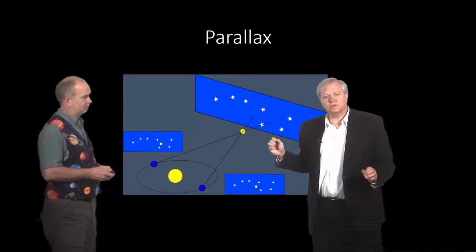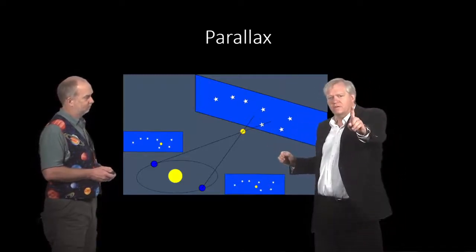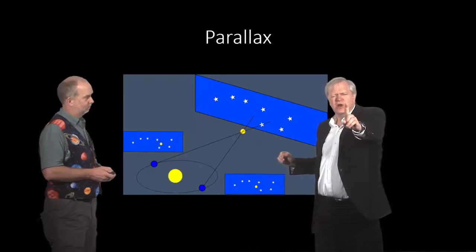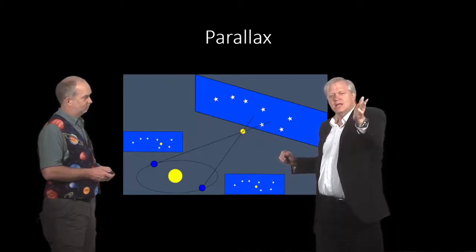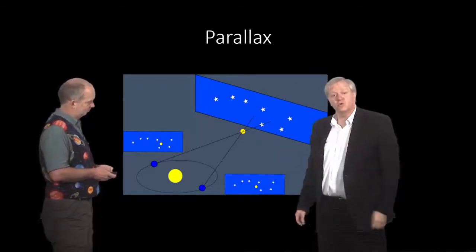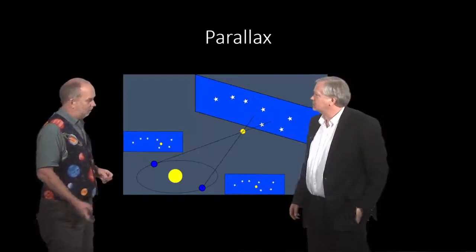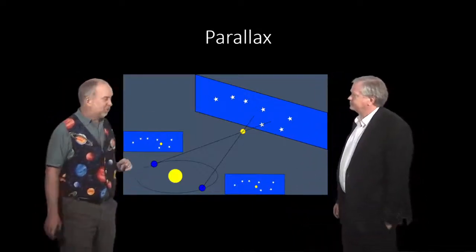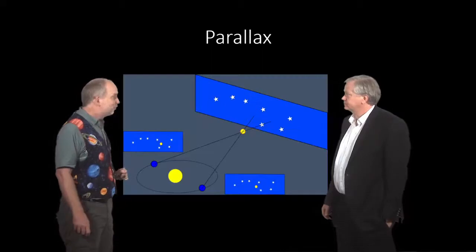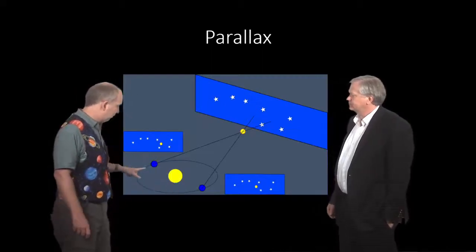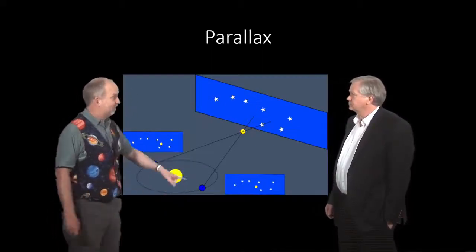It's the moral equivalent of putting your finger out in front of your face and changing your eyes back and forth and seeing your finger move against something in the background. I suppose we call this the first step of the distance ladder, but there's really even a zeroth step which is to actually work out how far the earth's orbit around the sun is.